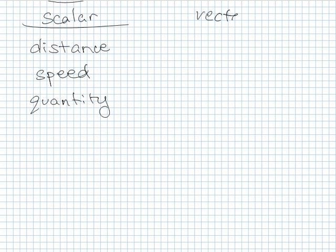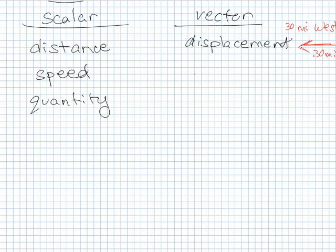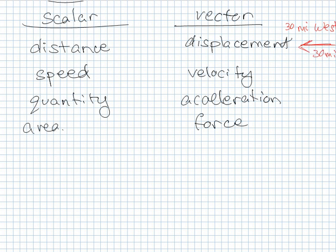And again a vector would be like displacement. So like I'm going 30 miles, 30 miles west or something like that and you draw it as an arrow. Another vector would be velocity. Another vector would be acceleration or a force. Those are all vectors. Area, volume, those are scalars because they're magnitudes that you can count stuff but it's not going anywhere in particular. All these are going somewhere. You have an acceleration in a direction, you have a force in a direction.